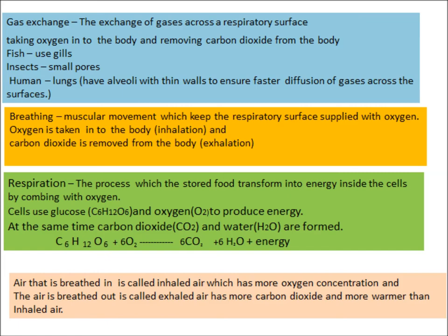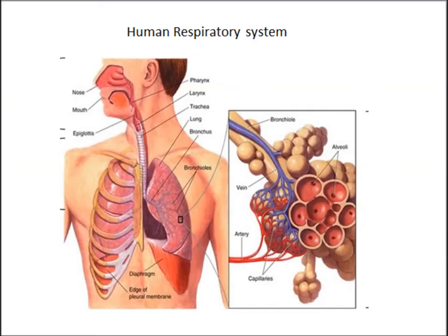The transformation of stored food into energy inside cells by combining with oxygen is respiration. The parts of the respiratory system are: nostrils, nasal cavity, pharynx, larynx, trachea, left and right bronchus, bronchioles, lungs, and diaphragm. In the alveoli, bronchioles open into small sac-like projections. Oxygen diffuses into the blood through the capillaries, and carbon dioxide in the blood capillaries is released back into the alveoli. In human lungs, alveoli have adapted with thin walls to ensure fast diffusion of gases.